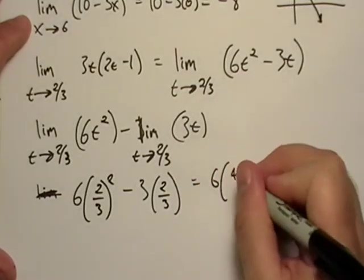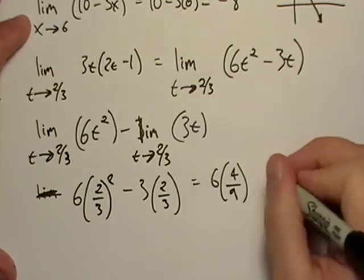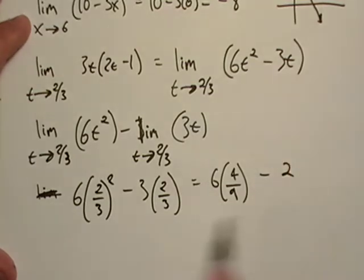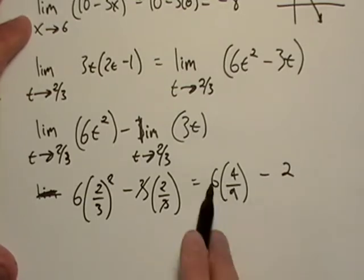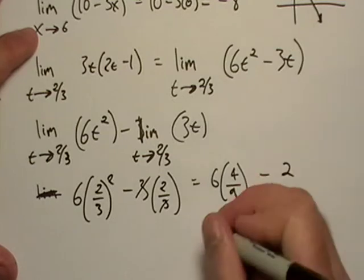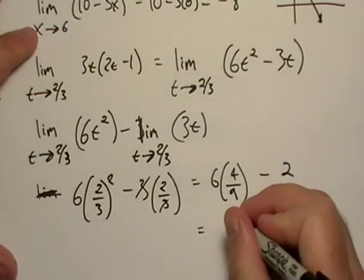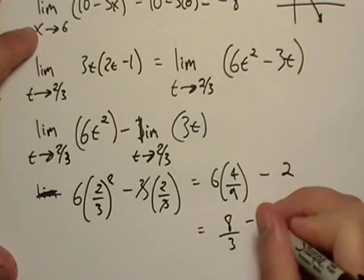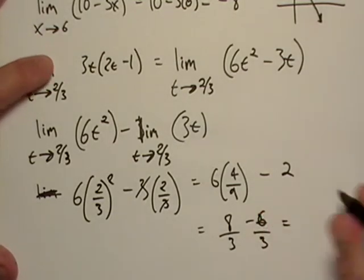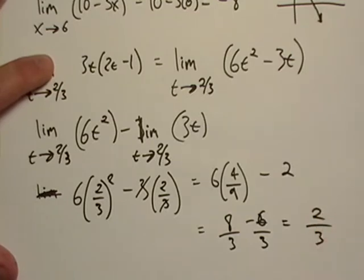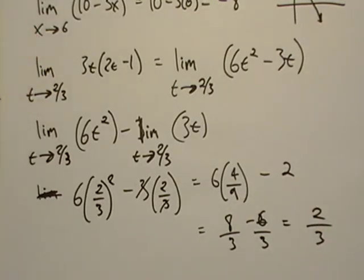And now we'll do some simplification. We get 6 times 4 ninths minus 2 because the 3's just really cancel out. So what do we get here? This is 2 thirds. This is 6 ninths. So that is equal to, if that's 2 thirds, then we get 8 thirds minus 2, which is really just 6 thirds. So it looks like we're back to 2 thirds on that one.